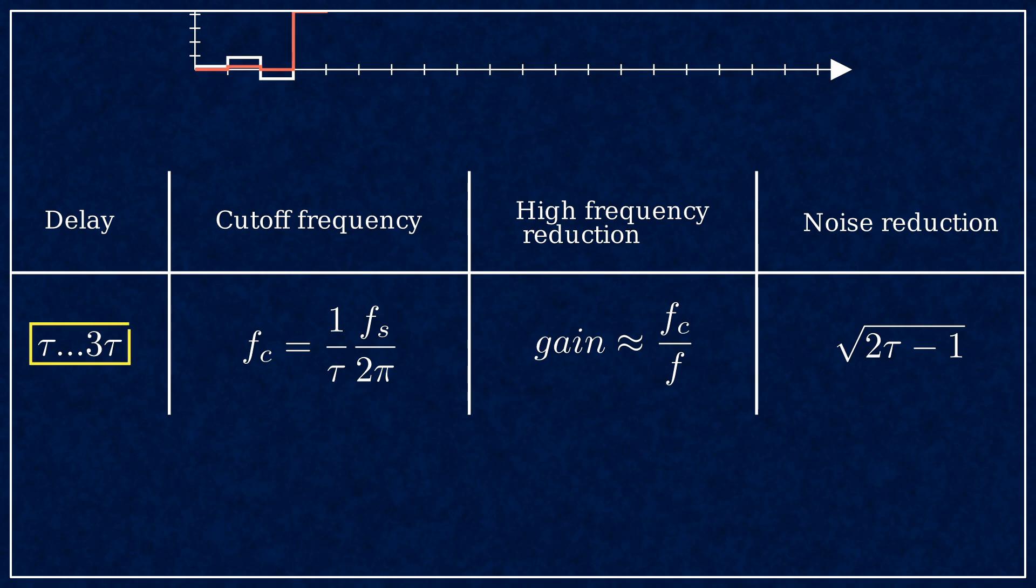The delay is between 1 and 3 time constants, unfortunately it's a bit fuzzy, depends on what you're looking for. The cutoff frequency is just 1 over τ in radians per unit delay. If you need something meaningful, you need to scale it with sampling frequency over 2π to get the frequency in Hertz. The high frequency attenuation is approximately cutoff frequency over input frequency, and the approximation is valid when you have frequencies more than twice the cutoff.